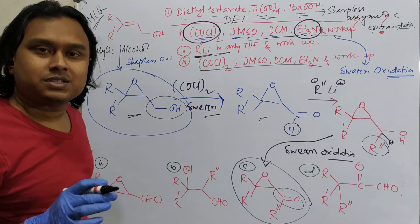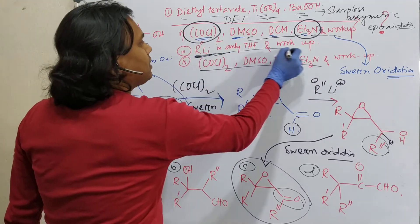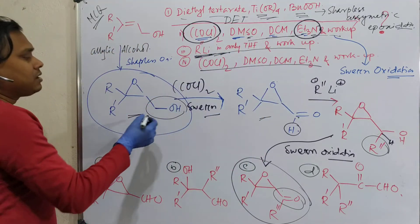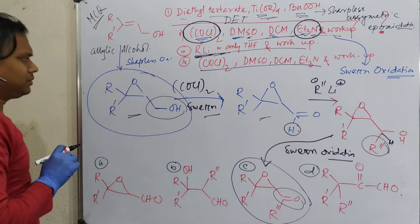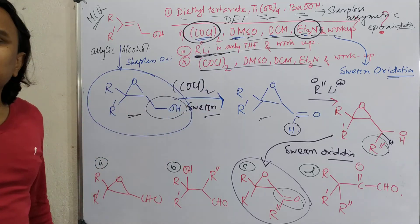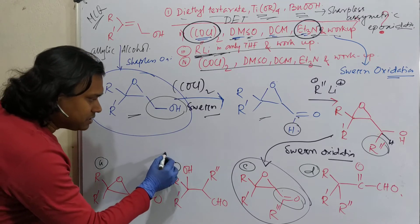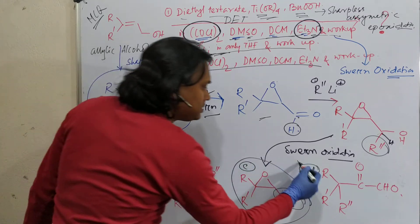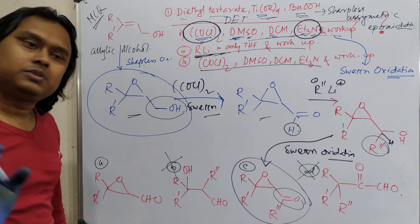So, Swern oxidation, whatever this thing, what can happen? Alcohol will be oxidized, fine. RLi will be added to ketone. By the way. See, Swern oxidation cannot open up this epoxide ring. So what can you expect? This epoxide ring broken, this and this gone. Because, under this condition, epoxide will not be open.